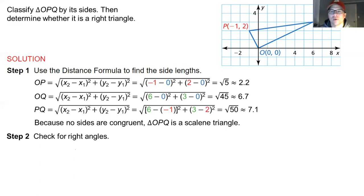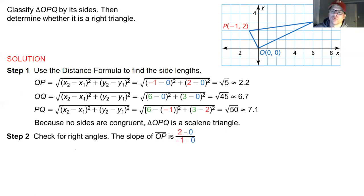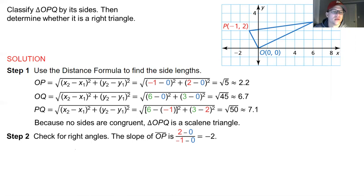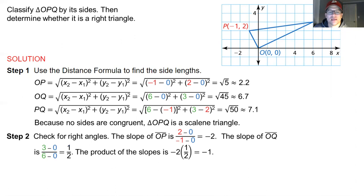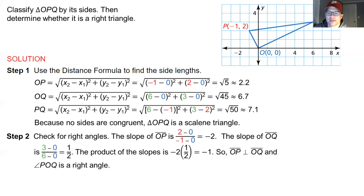The second step is to check for right angles. We use the slope formula between all three sides to see if any slopes are perpendicular. From O to P the slope is -2. From O to Q the slope is 1/2. Those are opposite and reciprocal — -2 and 1/2 — so those two sides are perpendicular and form a right angle, confirming this is a right triangle.